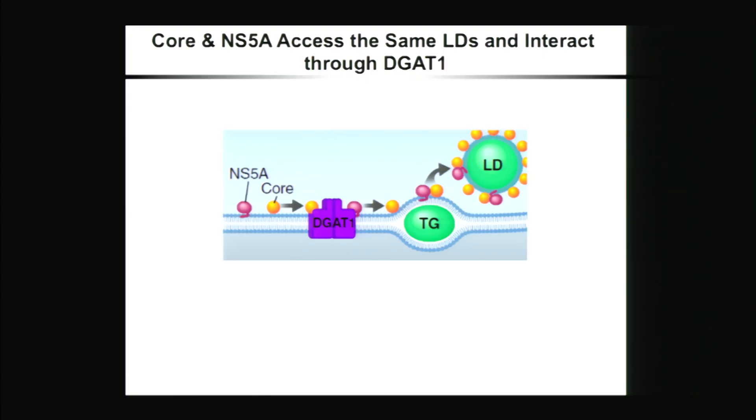Our current working model is that both NS5A and core interact with DGAT1 at the ER and get loaded onto nascent lipid droplets through DGAT1 activity. We think that together with NS5A comes the viral RNA, which NS5A is known to interact with, and this is how the different components required for assembly of new infectious particles come together at the same location—around the same lipid droplets.